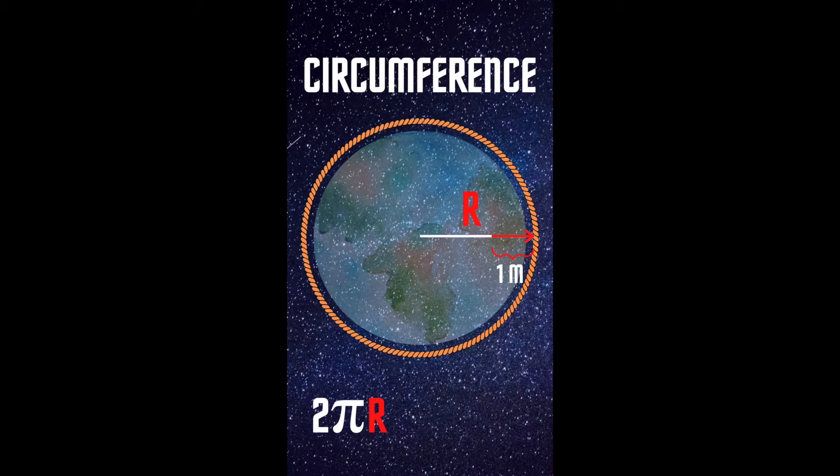When we raise the rope one meter above the surface of the Earth, all we're changing in the circumference formula is increasing the radius by one meter. So the length of the rope just increases by 2 times pi times one meter, or 6.3 meters.